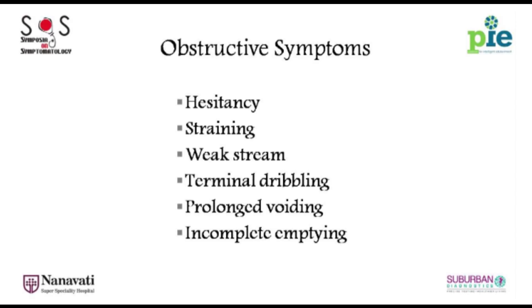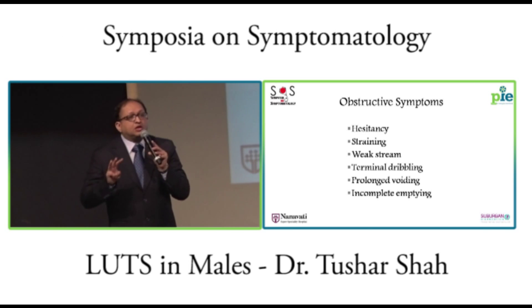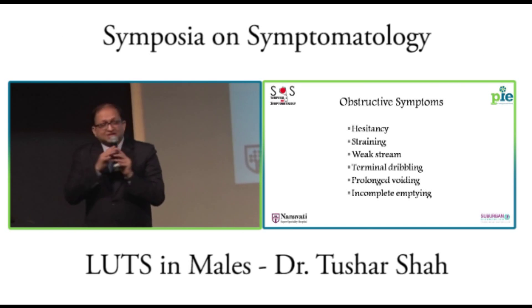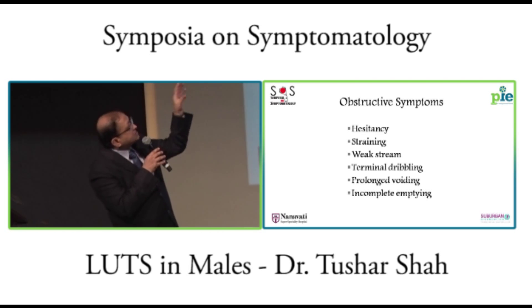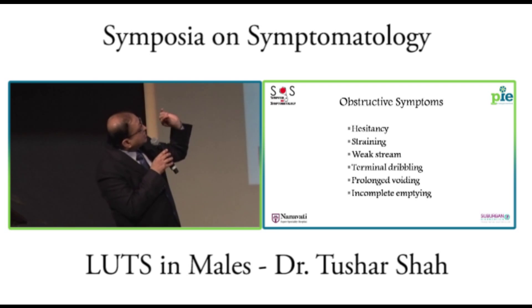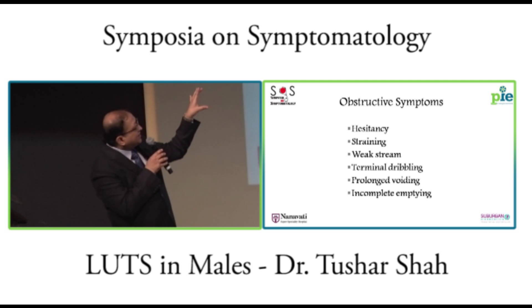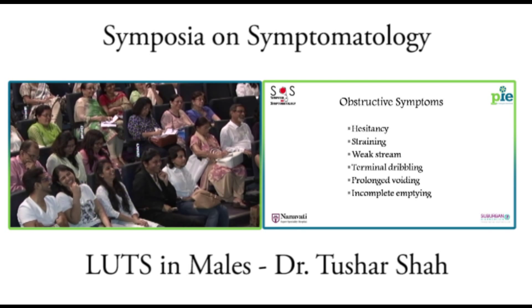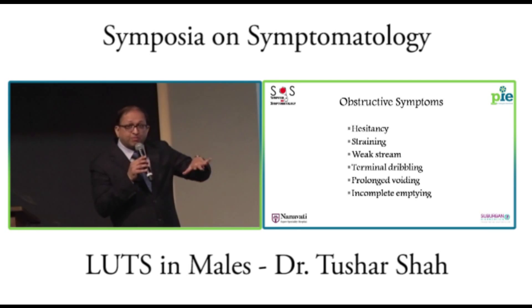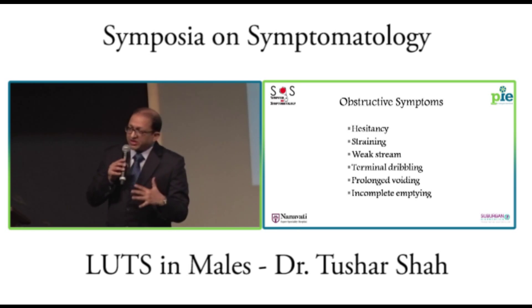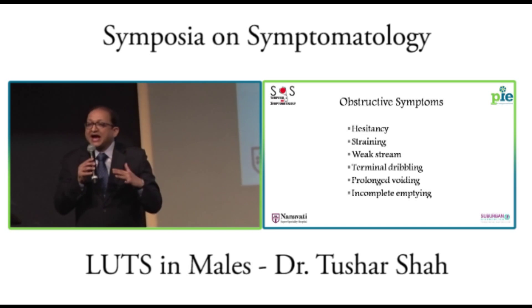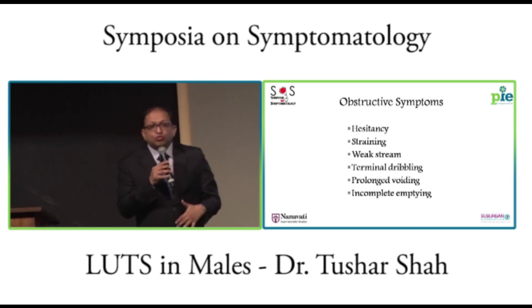There are three kinds of symptoms in a male with lower urinary tract disease. One is obstructive symptoms — meaning can't start, hesitancy, weak stream and straining, can't aim, terminal dribbling, can't stop, prolonged voiding, and incomplete emptying — double voiding, having to go back again very soon. These are obstructive symptoms.